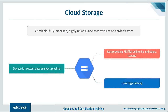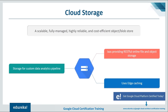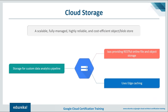Cloud Storage is a scalable, fully managed, highly reliable, and cost-efficient object or blob store. It redefines what the industry can expect from online storage by providing a unified offering across the availability spectrum — from live data tapped by today's most demanding applications to cloud archival solutions like Nearline and Coldline. Features include a single API across storage classes, scalability to exabytes of data, and very high availability across all storage classes.